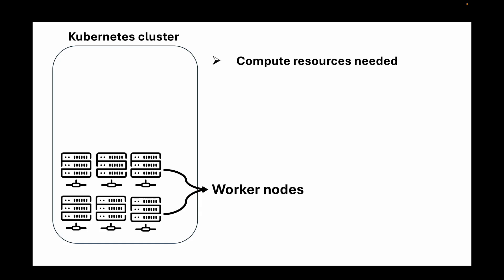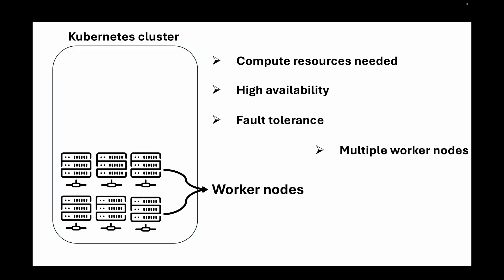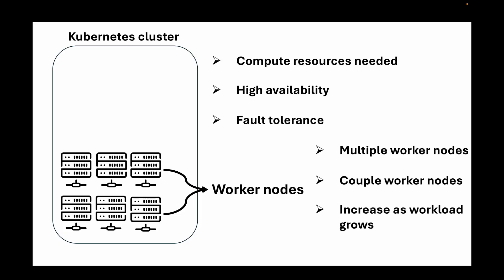The number of worker nodes in a cluster depends entirely on your compute resources needed — CPU, RAM, and everything else. For example, a cluster running on AWS using EC2 instances could have a mixture of instance sizes with varying levels of CPU, RAM, and performance optimization. For high availability and fault tolerance, we want multiple nodes so that if one fails, there are enough resources to pick up the workload. At minimum, we start with two worker nodes and grow from there.